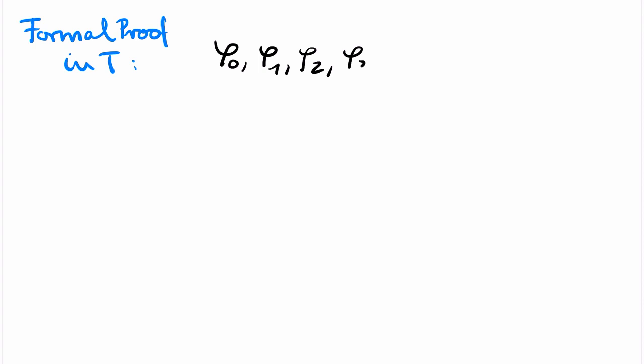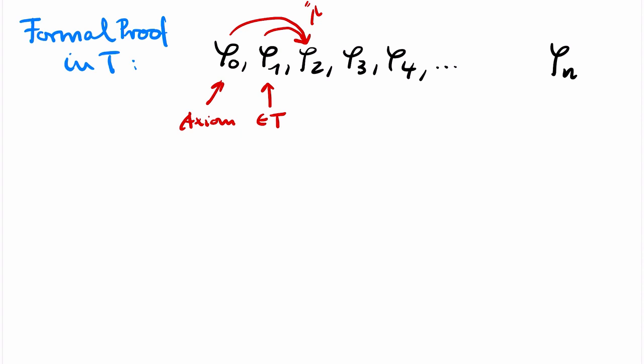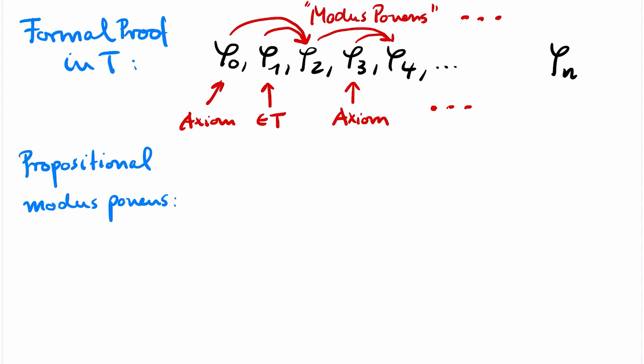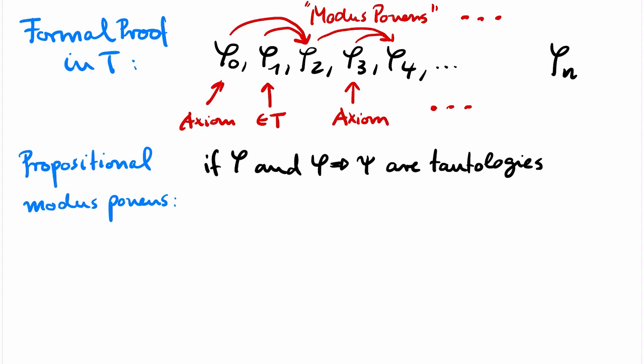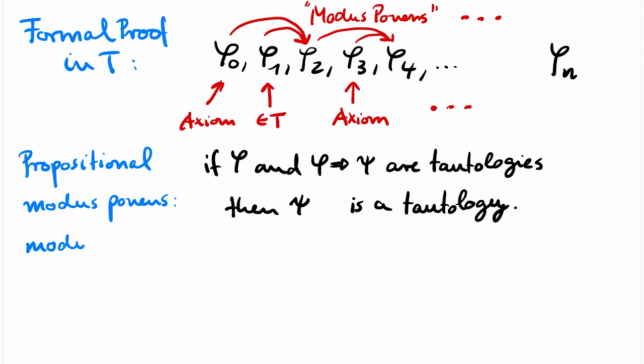A formal proof in T is simply a finite sequence of sentences. Each sentence in this sequence is either a logical axiom — these are first-order sentences that hold in all structures — or a sentence from T, or it can be derived from two sentences that come earlier in the sequence by a simple proof rule called modus ponens. We already know modus ponens from propositional logic. It states that if φ is a tautology and φ implies ψ is a tautology, then ψ is a tautology.